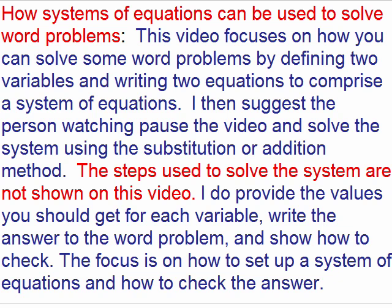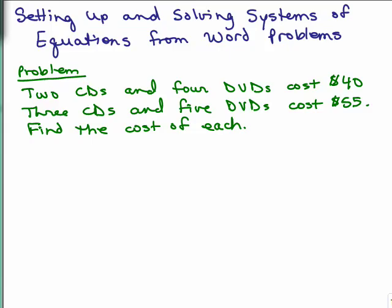Usually you can do this when you're looking for two things. That's sort of the key that you can define two variables and set up a system. Once you know how to solve a system of equations, you can then use systems of equations to solve certain word problems where you're looking for two things as opposed to one thing. For instance, you might be looking for the width and the length of a rectangle as opposed to just the width.